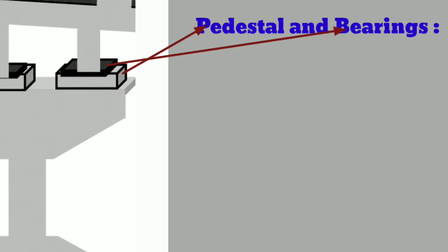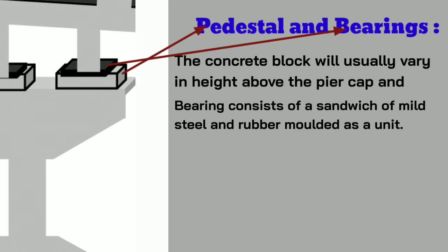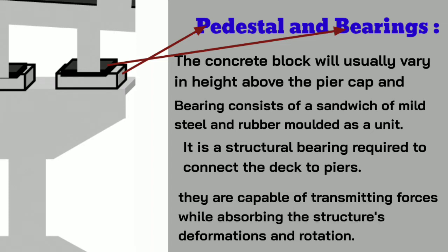Now, pedestal and bearings. Pedestal is a concrete block that usually varies in height above the pier cap. A bearing consists of a sandwich of mild steel and rubber moulded as a unit — it is a structural bearing required to connect the deck to the pier. They are capable of transmitting forces while absorbing the structure's deformations and rotations.